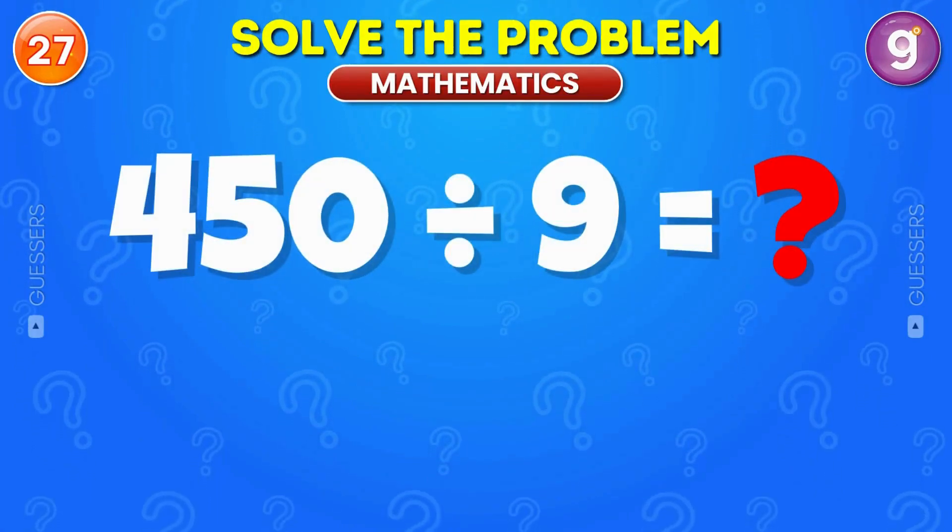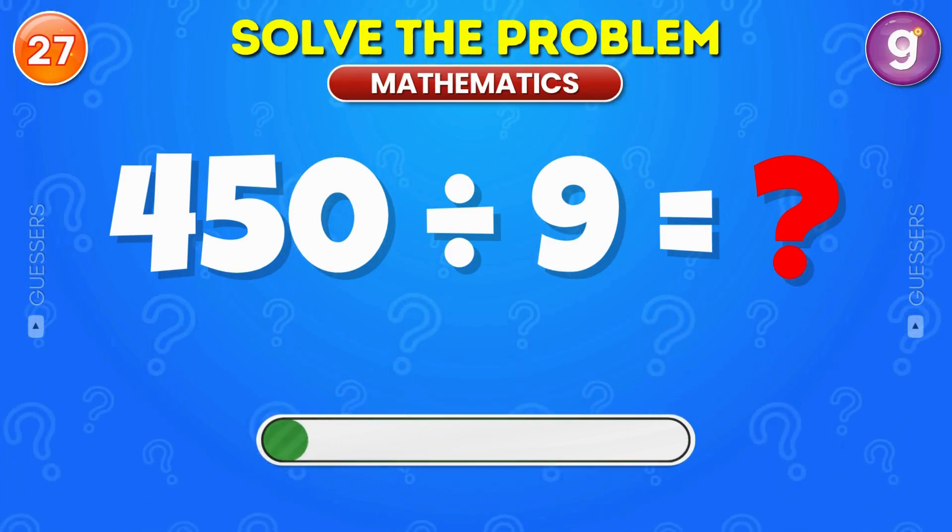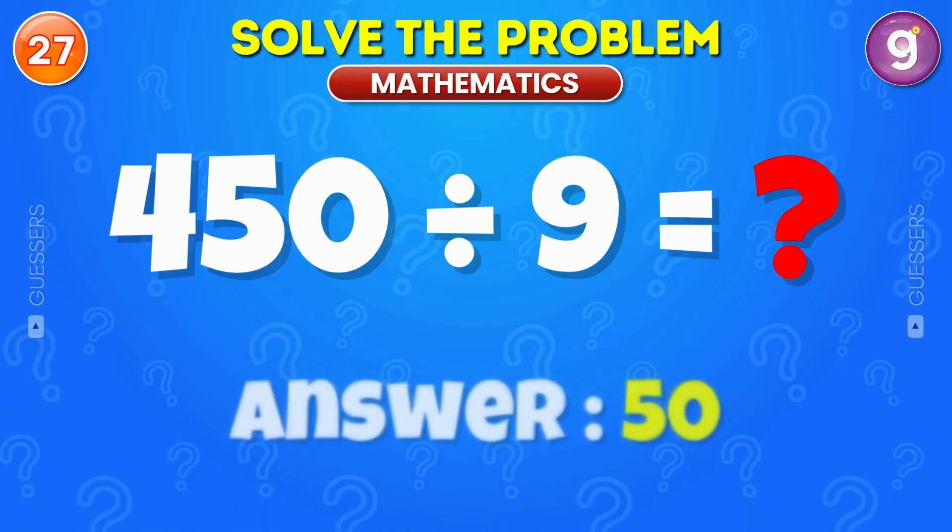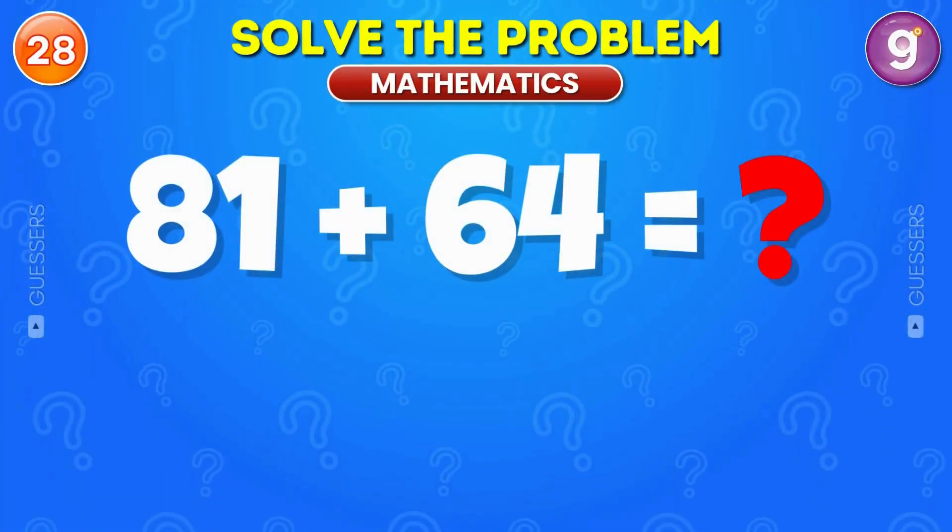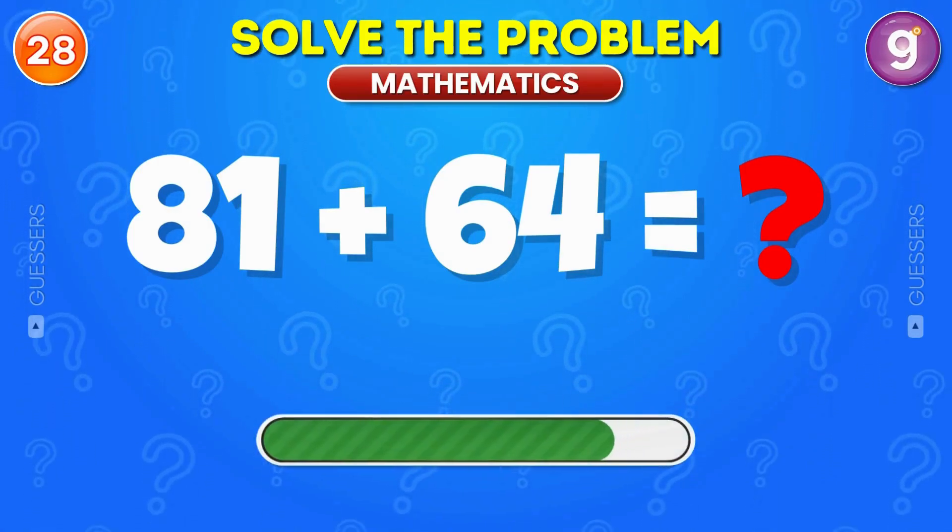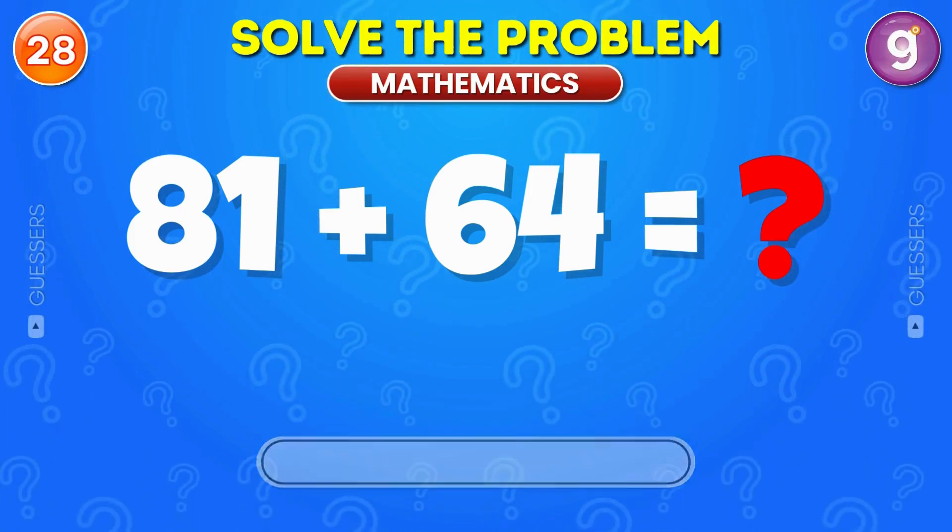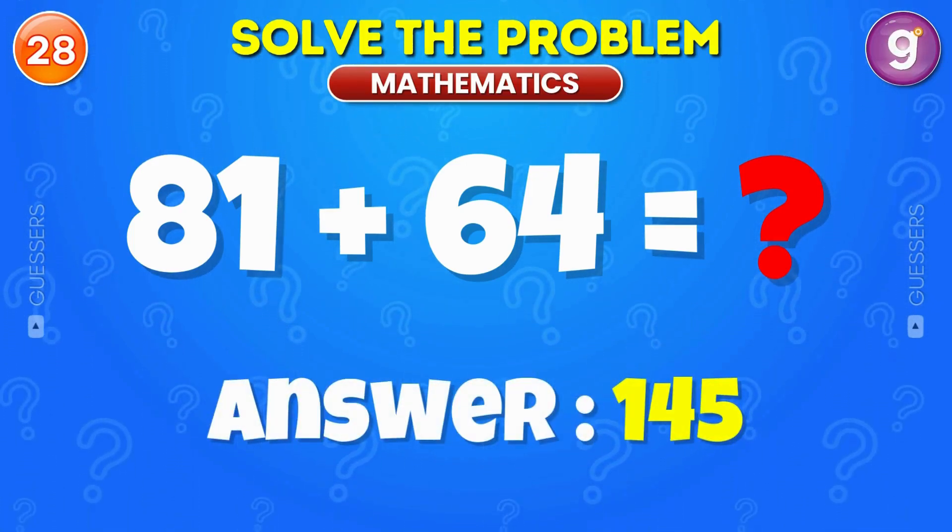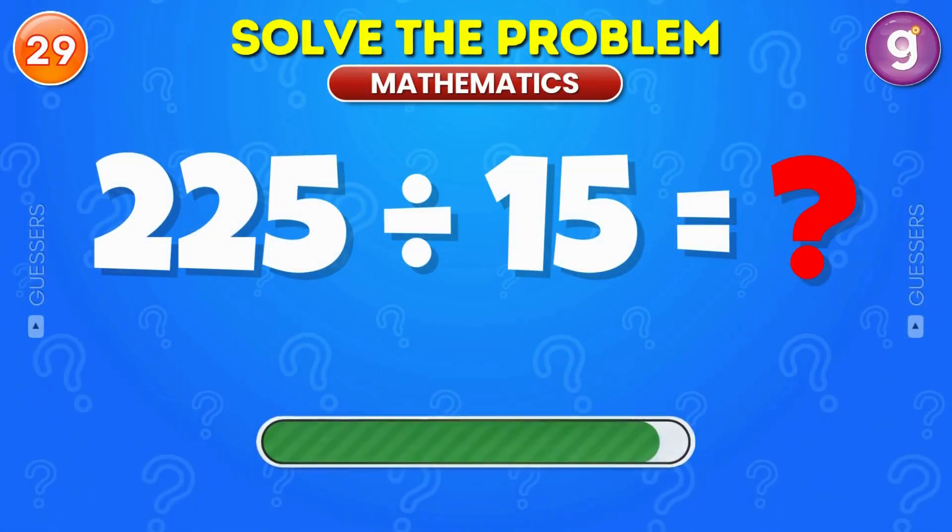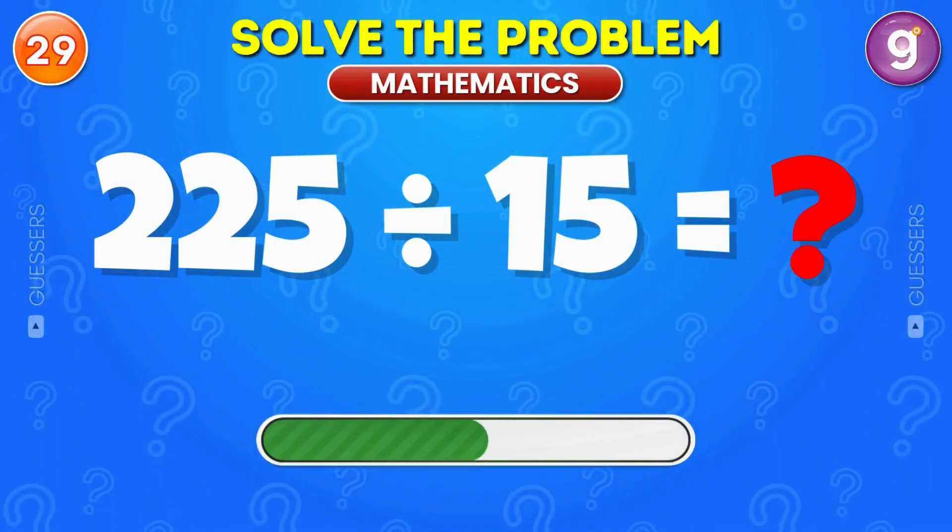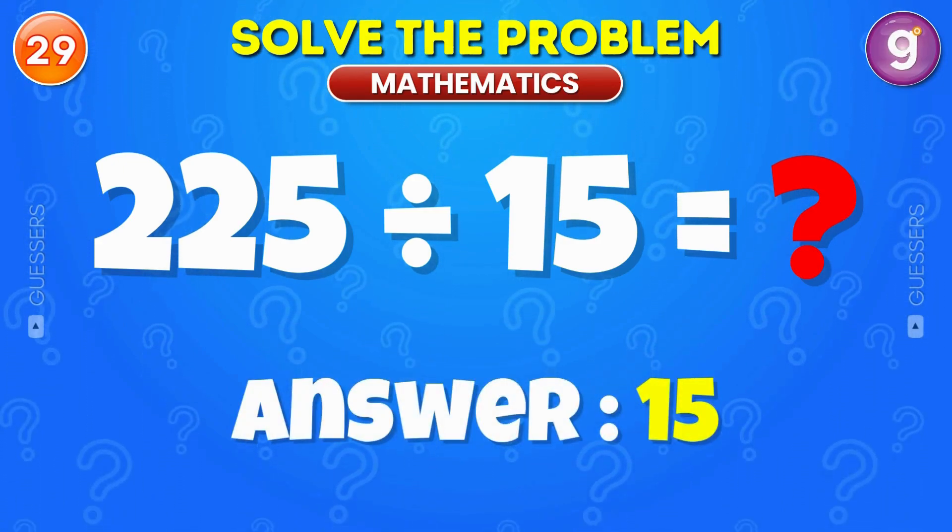Divide 450 by 9. The answer is 50. Add 81 and 64. The answer is 145. Divide 225 by 15. The answer is 15.